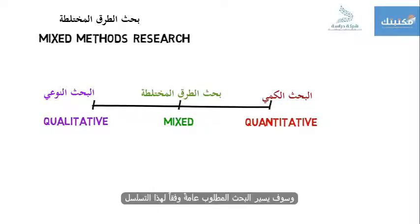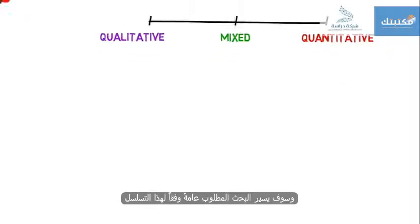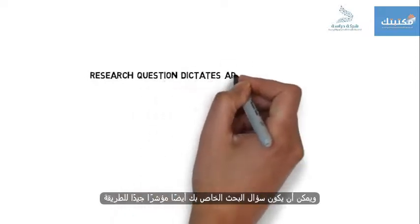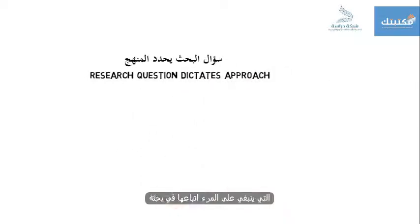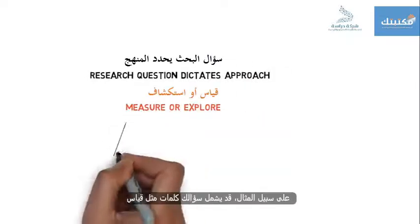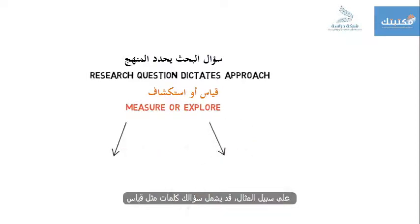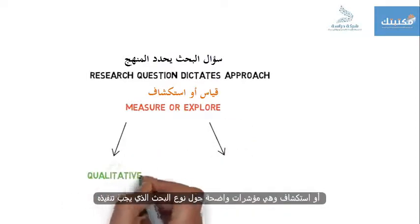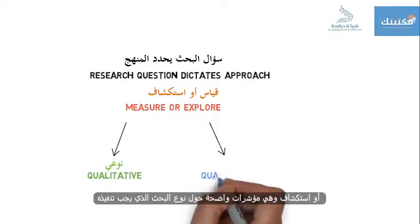The research required will generally fit somewhere on this continuum. Your research question can also be a good indicator as to which way one should approach their research. For example, your question may include words like 'measure' or 'explore' — clear pointers as to the type of research that needs to be carried out.